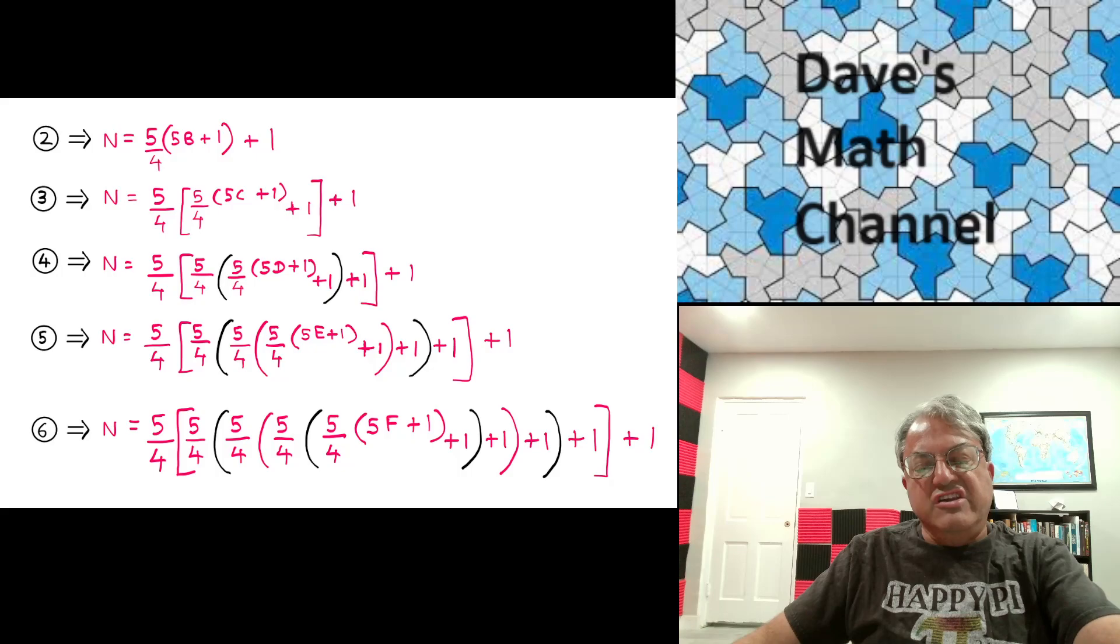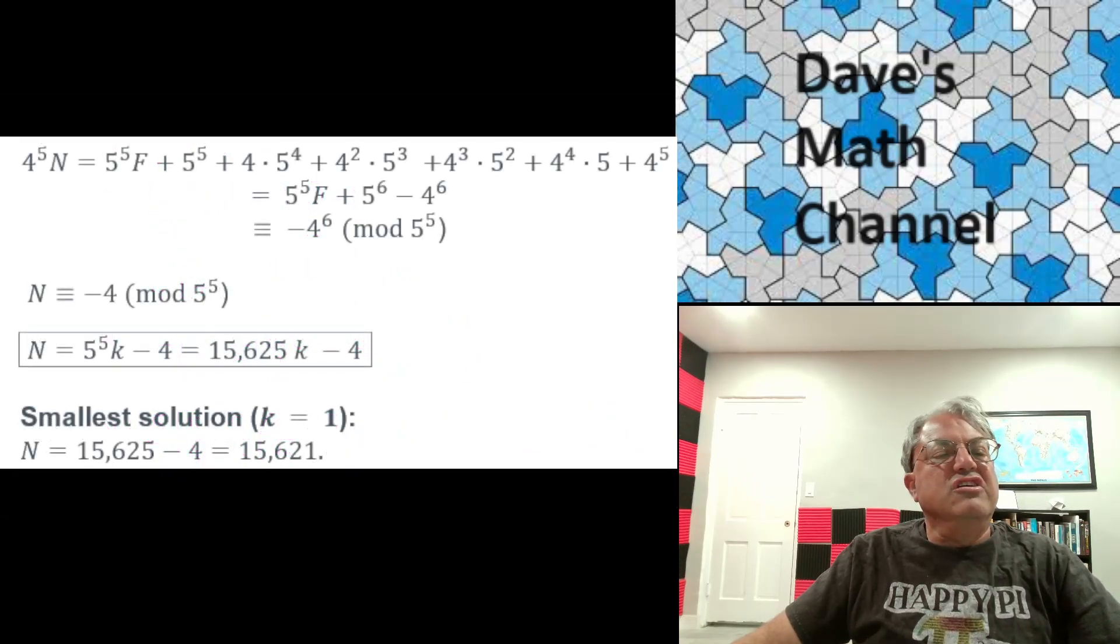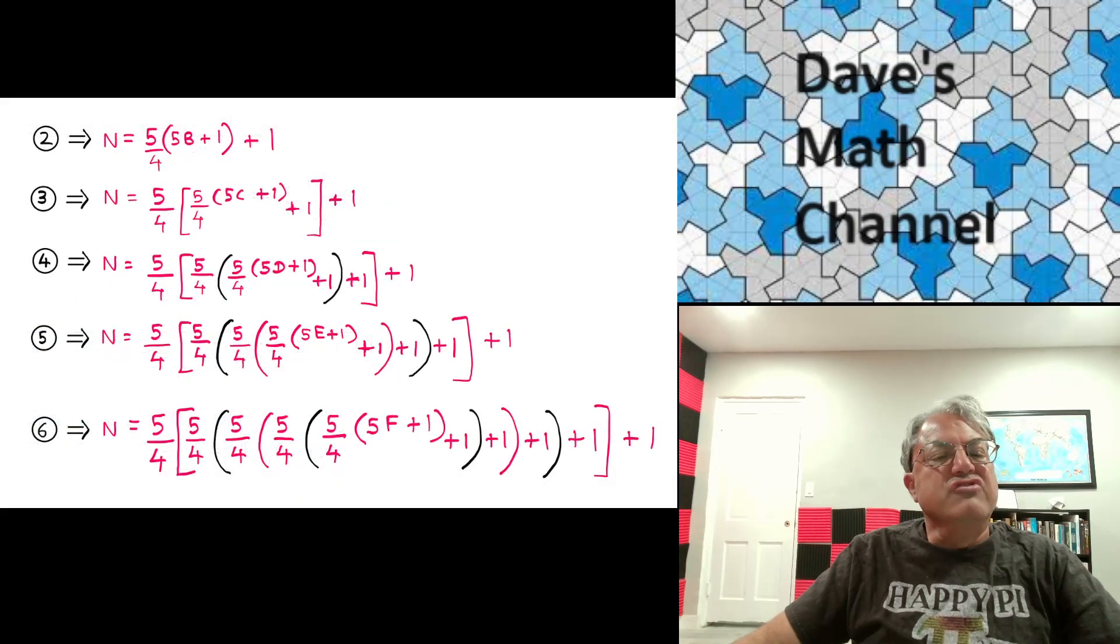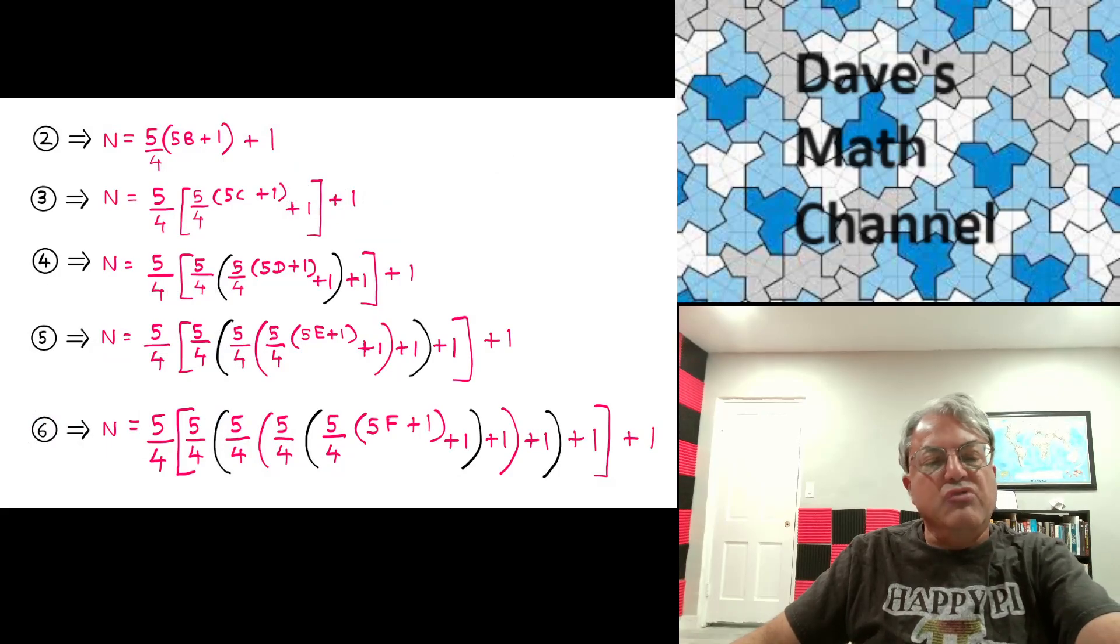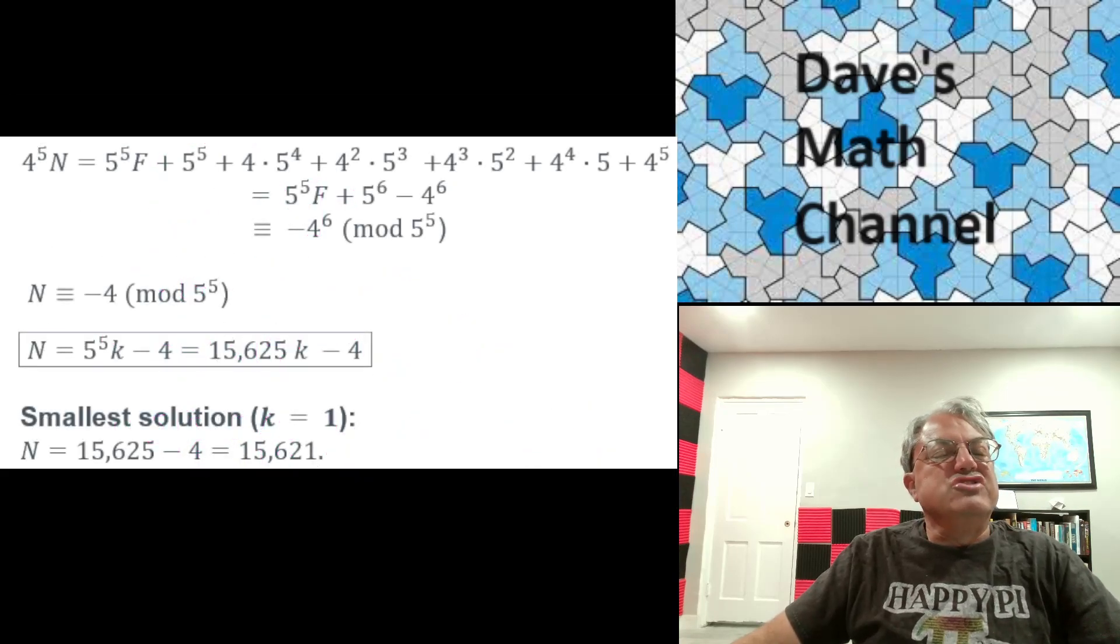But you can simplify that expression, which I did here. So when you do this, you can multiply the whole thing by 4 to the fifth power, because notice there's five factors of 4 in the denominator. If you put everything over a common denominator, you get 4 to the fifth power. So you can clear the denominator by multiplying everything by 4 to the fifth, which I've done here. And you can check for yourself when you take care of all the parentheses, you get this kind of ugly expression.